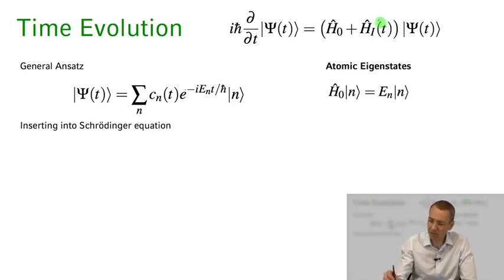So we have this time dependent interaction Hamiltonian acting on state psi. This is the Schrödinger equation and this is what we need to solve in order to describe the time evolution of the quantum mechanical system. Now in order to solve that we're going to make an expansion of our wave function psi of t in terms of the basis functions of our atomic system.